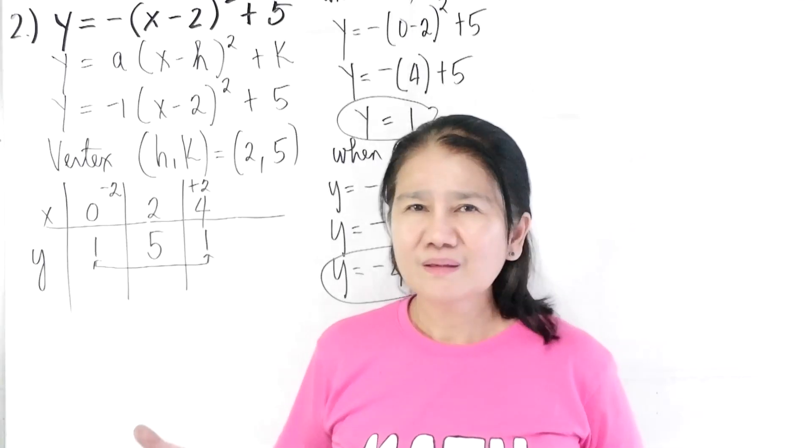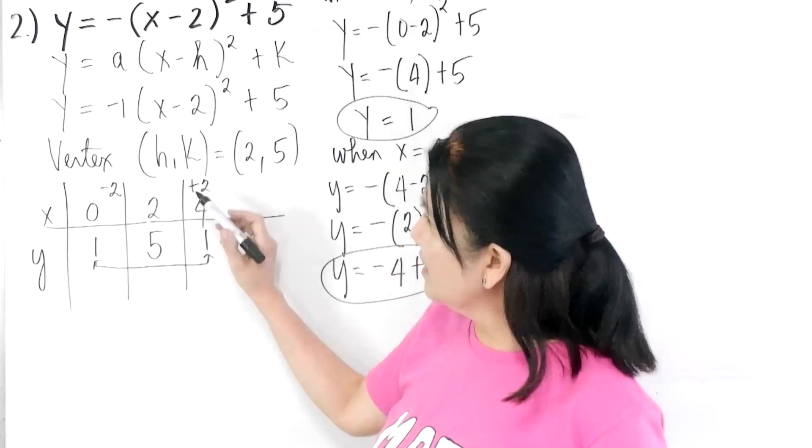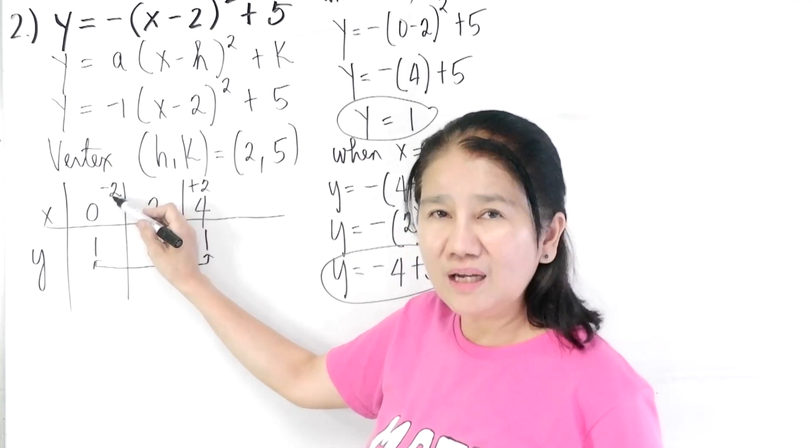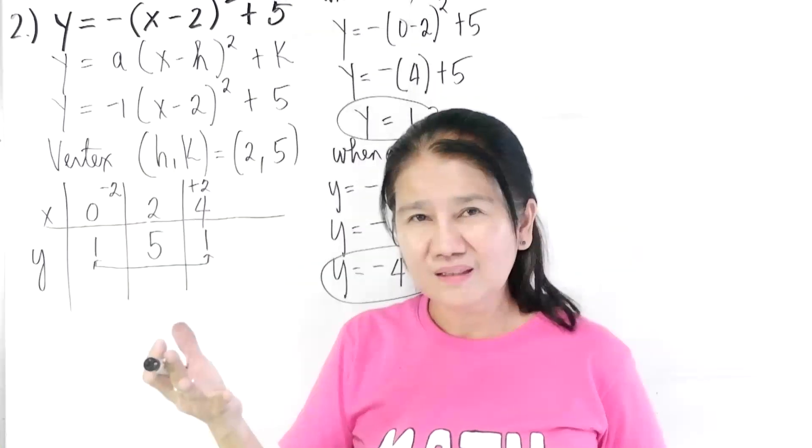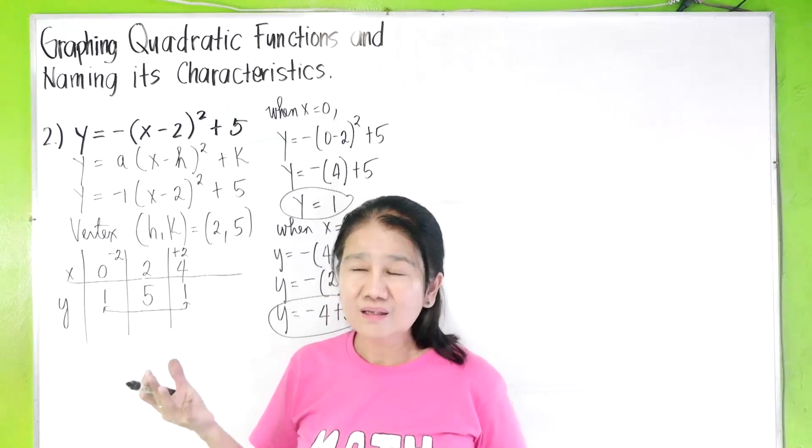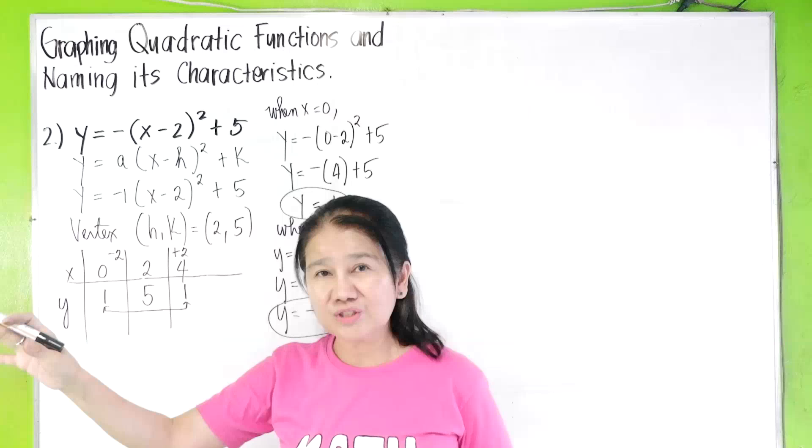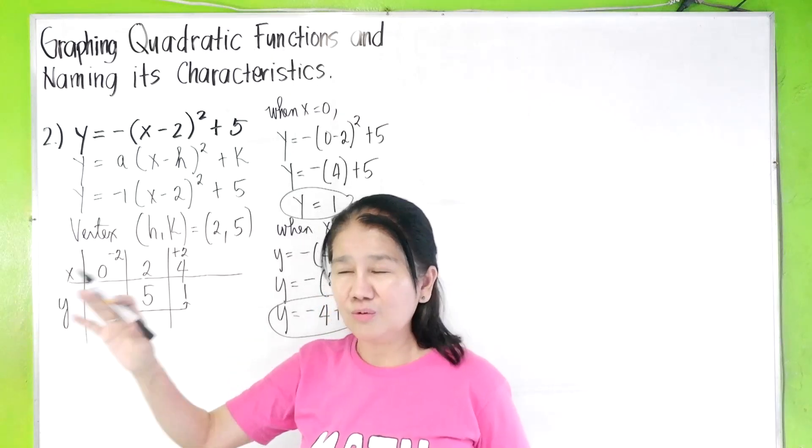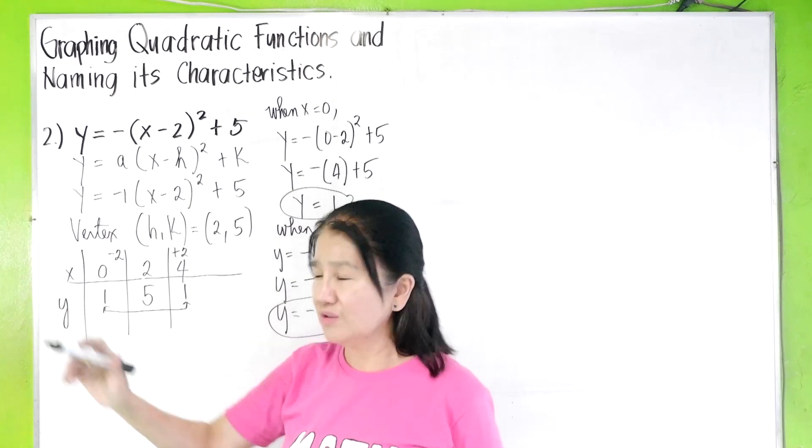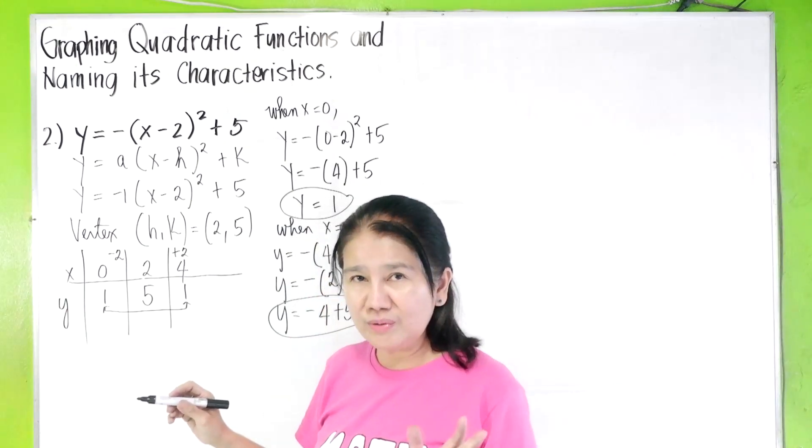The question is, what if instead of adding two here, I will add one instead? Okay. Let us do that. You can also do that. If you want to add ten, it's okay, provided that you also subtract ten to the other side. If you want to add five, it's okay, provided you subtract five to the other side. Let me just show it to you.